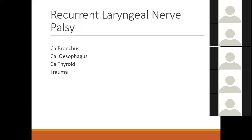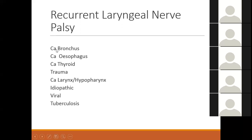Iatrogenic trauma means a surgeon can cause paralysis of the recurrent laryngeal nerve, for example in thyroid surgery if the surgeon is not careful. Patients who had coronary artery bypass grafting or chest surgery can present with left recurrent laryngeal nerve palsy. Carcinoma of the larynx or hypothyroidism can also present with recurrent laryngeal nerve palsy. Idiopathic, viral, and tuberculosis are rare causes. The most common cause of recurrent laryngeal nerve palsy on the left side is carcinoma of the bronchus and carcinoma of the esophagus.